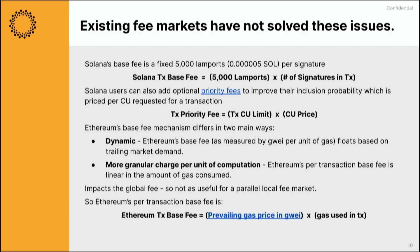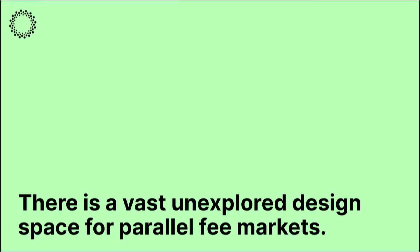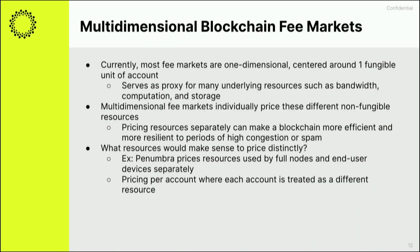Solana currently has a base fee that does not account for the amount of compute units used. Ethereum's base fee dynamically changes but is a global fee. A global base fee is useful in extreme cases — for example, if many non-overlapping transactions fill a Solana block, we might consider raising it. But in general, we want to keep the global fee very low and only raise the local fee for applications seeing heavy activity.